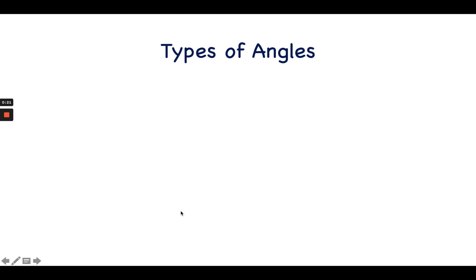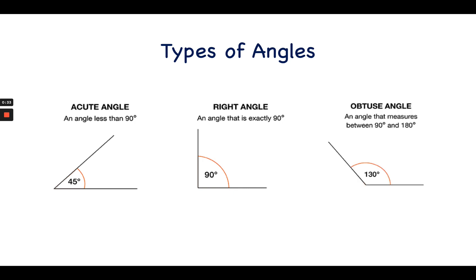And there are different types of angles. There is an acute angle, which would be an angle less than 90 degrees. A right angle is an angle that measures exactly 90 degrees. And an obtuse angle is an angle that is greater than 90 but still less than 180 degrees.